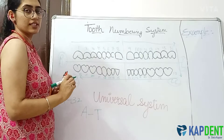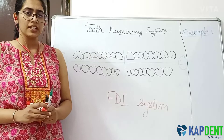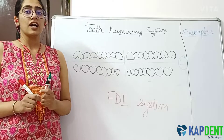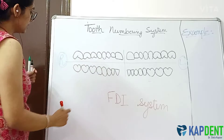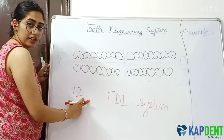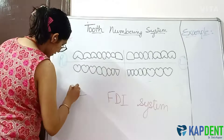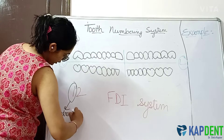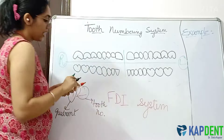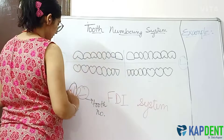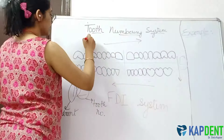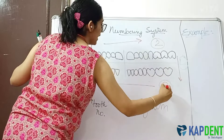The third and final system is the FDI system. This system has been approved by the WHO and other organizations like the International Association of Dental Research. It is basically a two-digit system — for example, 1, 2 — and the two digits are pronounced separately as '1, 2,' not '12.' The first digit denotes the quadrant, while the second digit is the tooth number. The same direction is followed for quadrant numbering: upper right is the first quadrant, upper left is the second, lower left is the third, and lower right is the fourth quadrant.